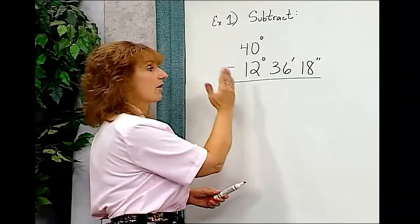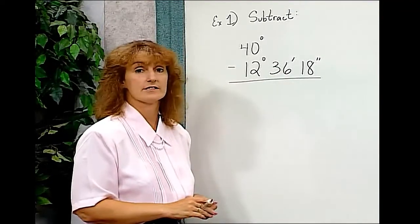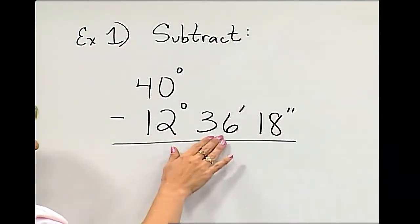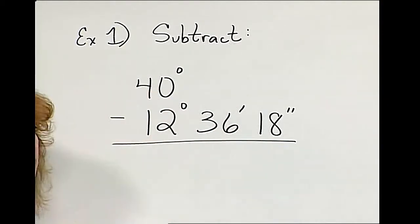But we have to make sure our columns are always lined up. For example, if we needed to subtract 12 degrees, 36 minutes, 18 seconds from 40 degrees,